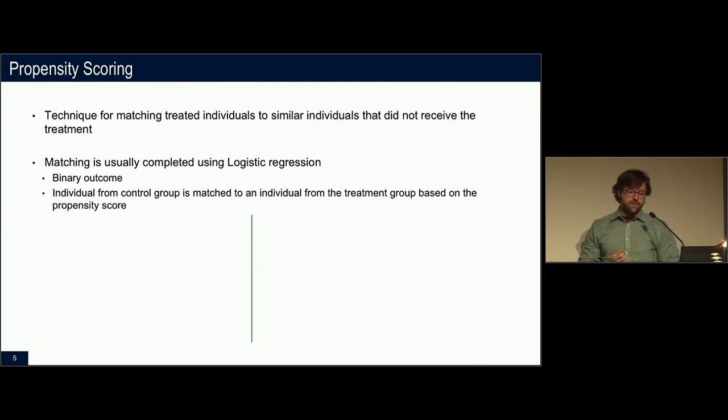Propensity scoring, though, is a technique for matching treated individuals to controlled individuals when you don't have the ability to pick or it's unethical to pick. And it's usually done using something like logistic regression because it's a binary outcome. Either you had the treatment or you did not have the treatment. And what it does is it matches the treatment individuals to control individuals based on the probability that you would have actually entered into the study.